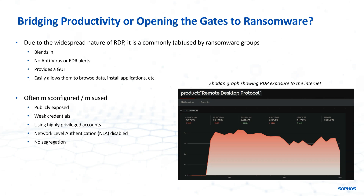We also see a lot of misuse of RDP within organizations. Administrators incorrectly use highly privileged accounts for RDP — such as service accounts or domain admins — when they should be using the principle of least privilege and only accessing devices with low-privileged accounts to perform that task only. We also see administrators disabling security features of RDP such as Network Level Authentication, which we'll discuss in more depth throughout this series.